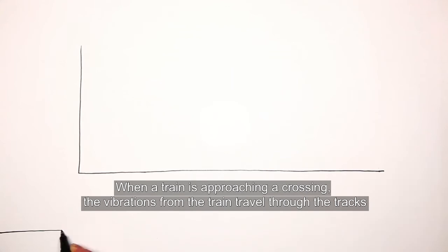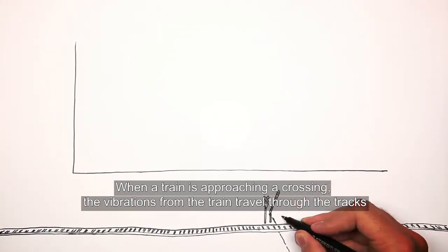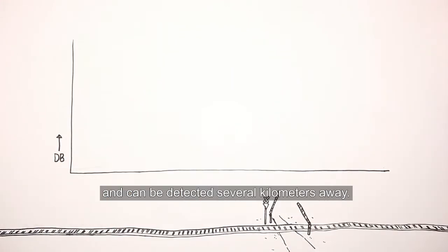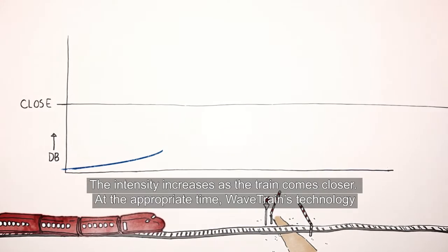When a train is approaching a crossing, the vibrations from the train travel through the tracks and can be detected several kilometers away. The intensity increases as the train comes closer.